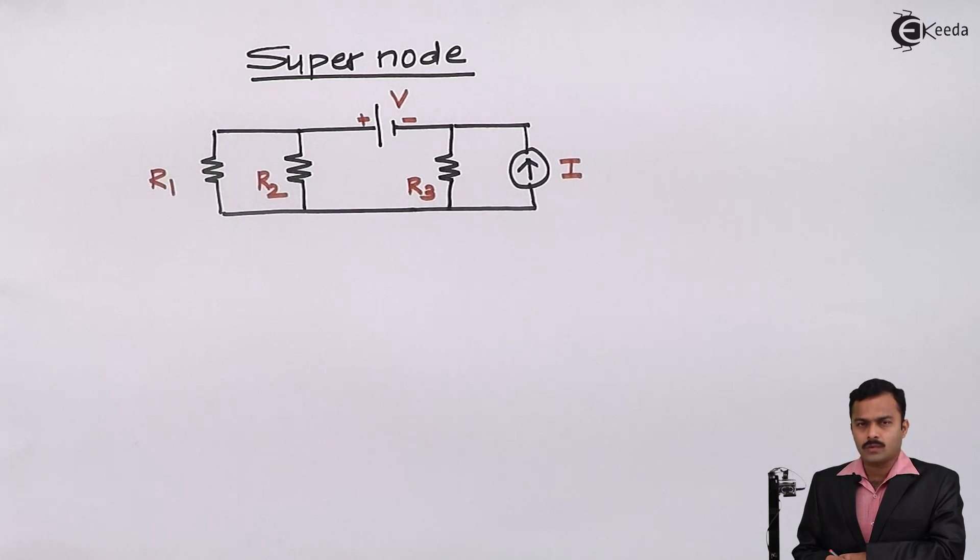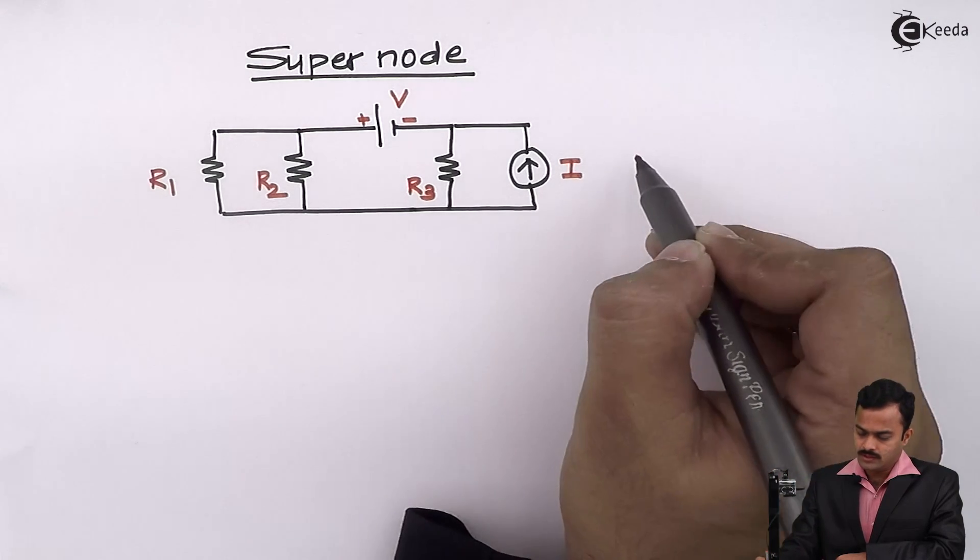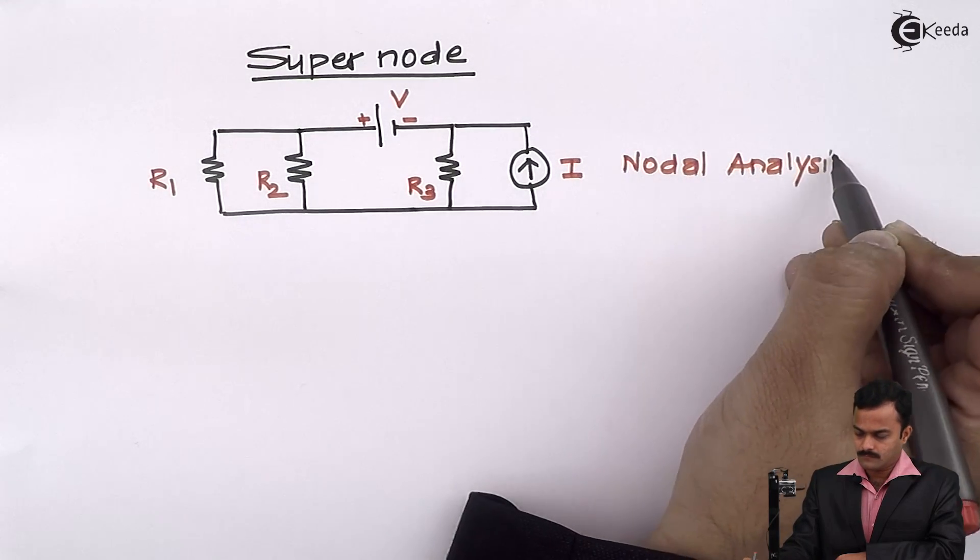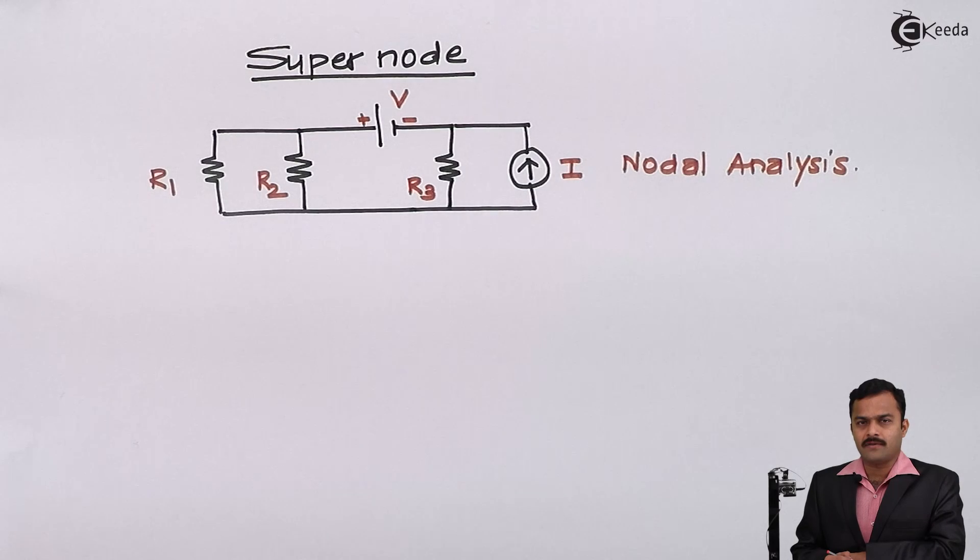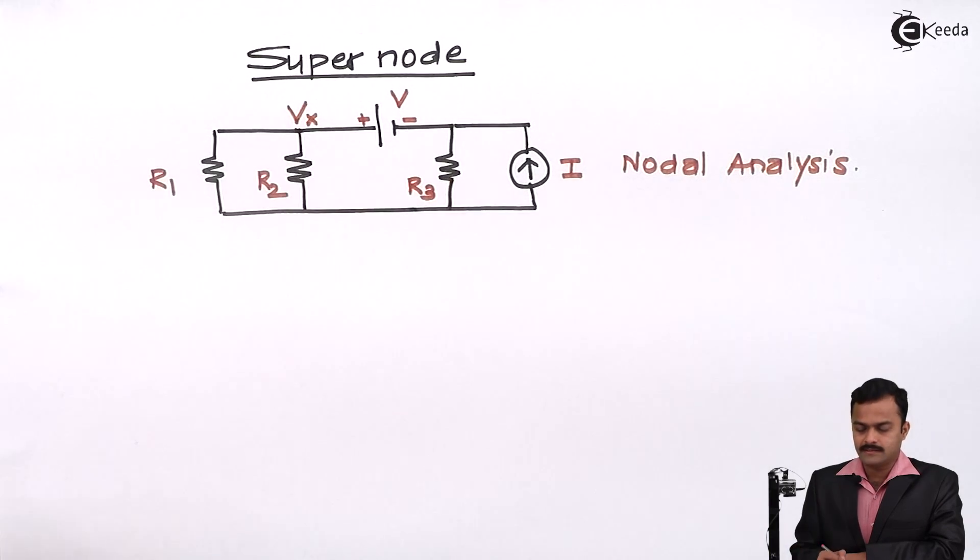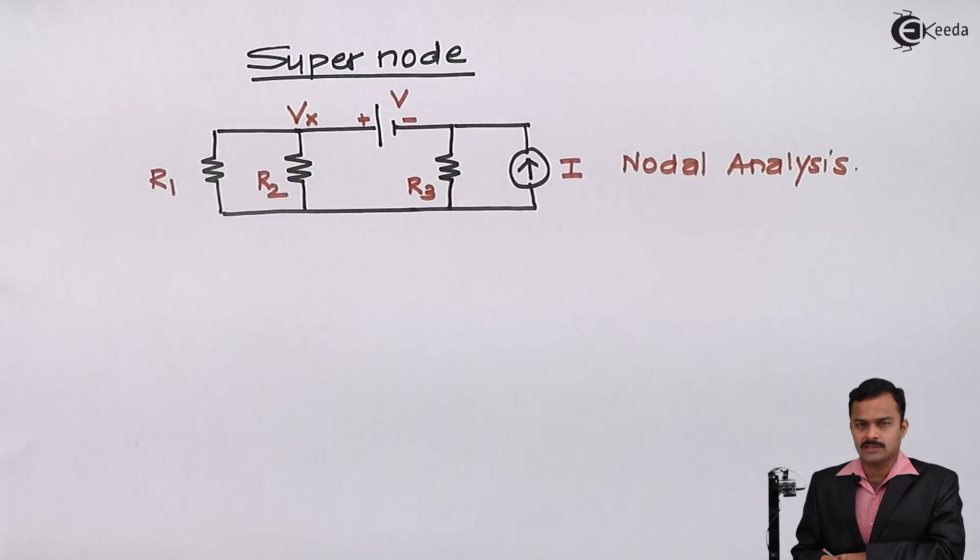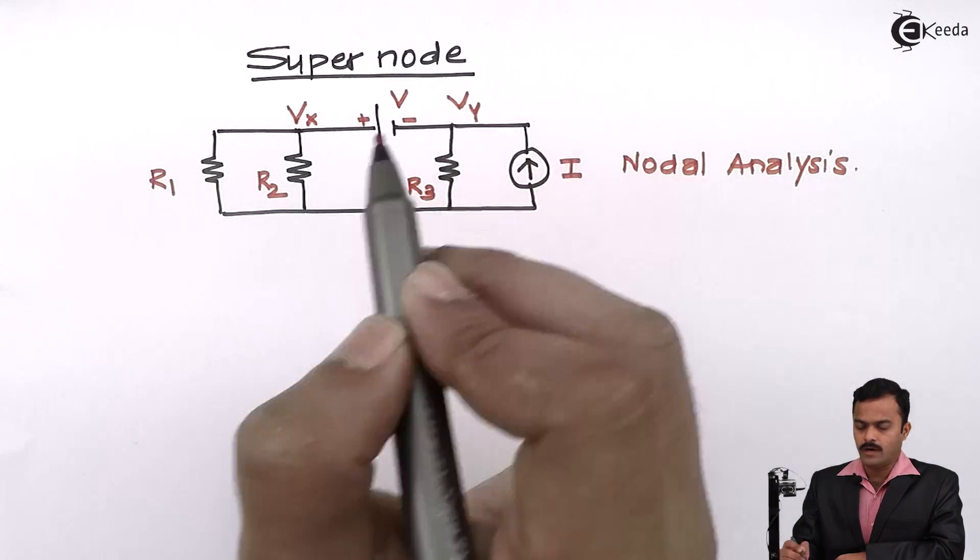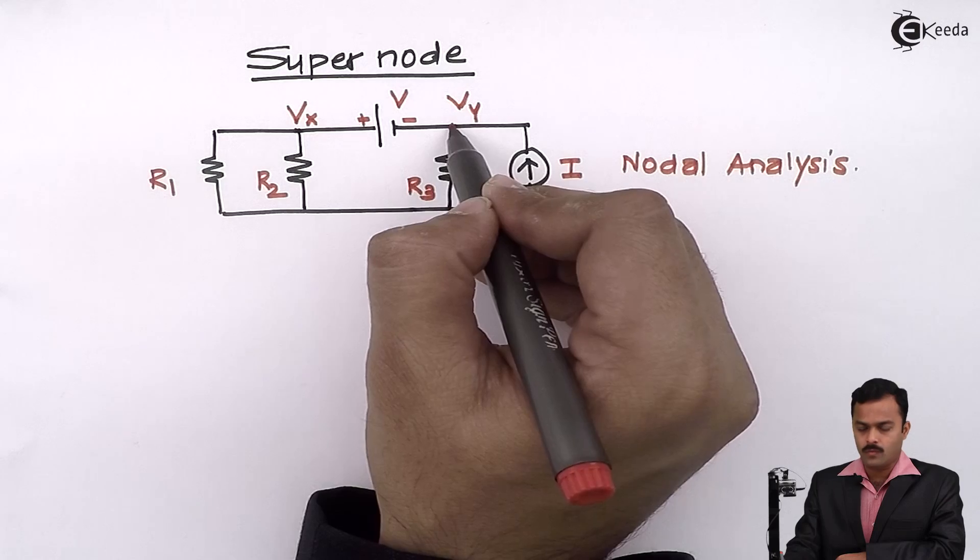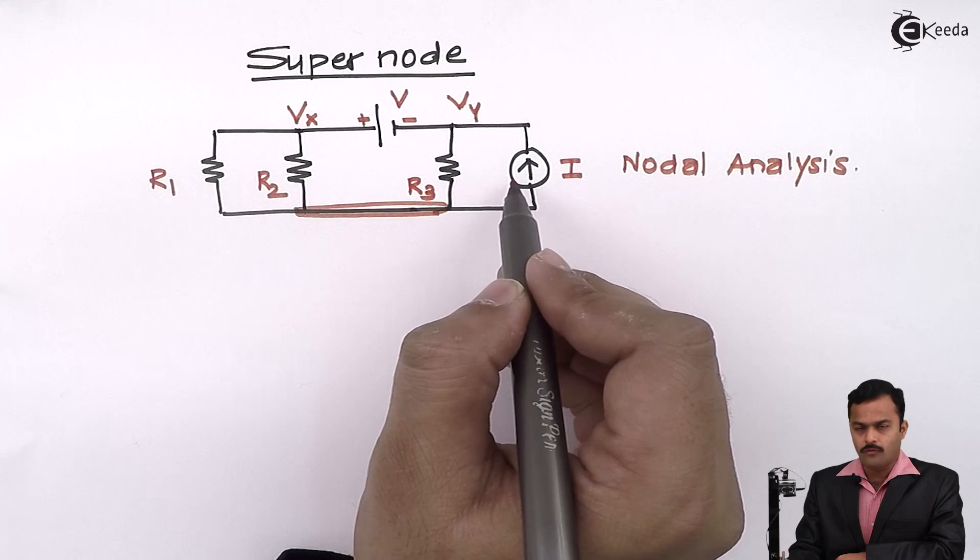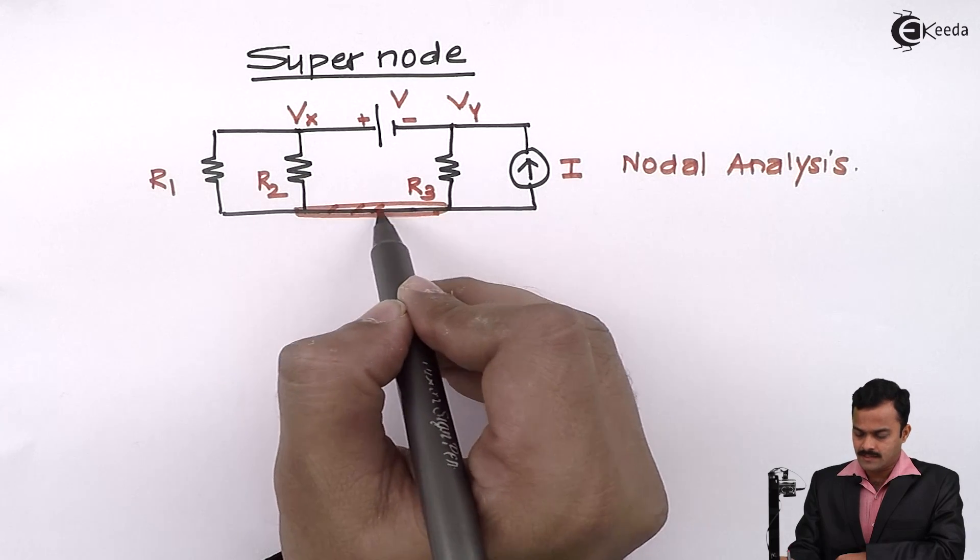Now we have to analyze this circuit using nodal analysis. Let's define how many nodes are there in this circuit. Node number 1. I will write Vx as a potential of node x, Vy as a potential of node y, and obviously I will consider this node where four branches are connected as a reference.